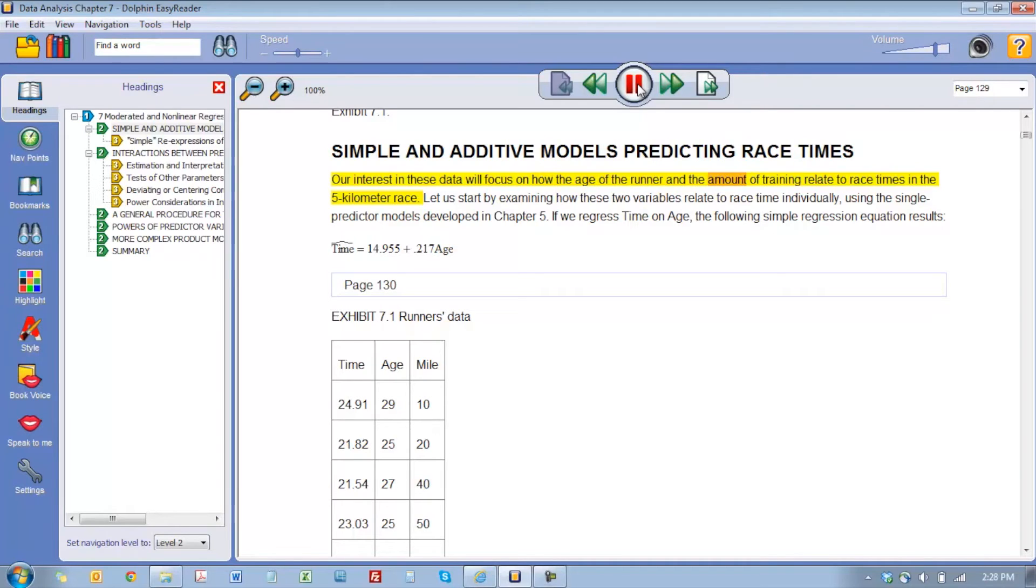Technology is amazing, and now there is a process that will convert written math equations into equations that can be read out loud using a screen reader such as the Dolphin EasyReader located in the student download center. This process is called MathML.